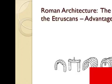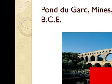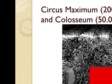Roman architecture: the arch, inherited from the Etruscans and its advantages. The Pont du Gard in southern France, 20 to 10 BCE. The Circus Maximus held approximately 200,000 people, while the Colosseum held around 50,000.